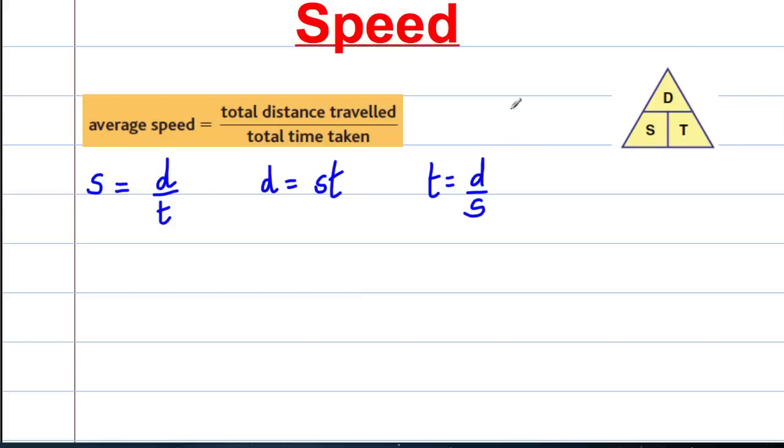Now sometimes students like to remember it using this triangle here. I prefer higher students not to do that and use their algebraic manipulation techniques. But if you are stuck: if you want to work out the speed, it's distance over time; if you want to work out the distance, it's speed times time.